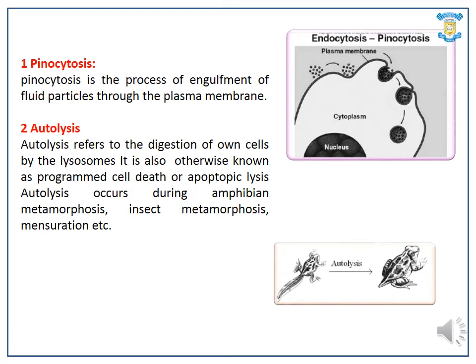Pinocytosis is the process of engulfment of fluid particles through the plasma membrane. Autolysis refers to the digestion of dead cells by the lysosome. It is also otherwise known as programmed cell death or apoptotic lysis. Autolysis occurs during amphibian metamorphosis, insect metamorphosis, and similar processes.